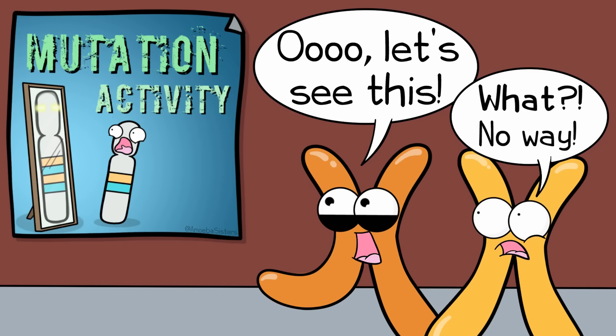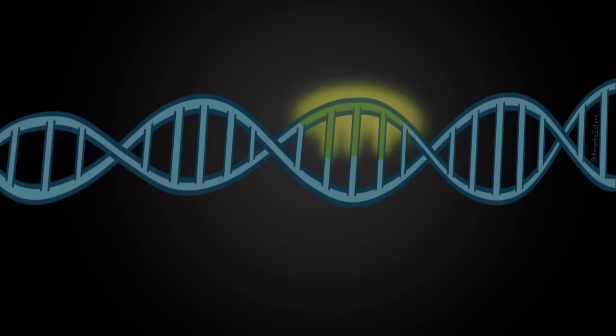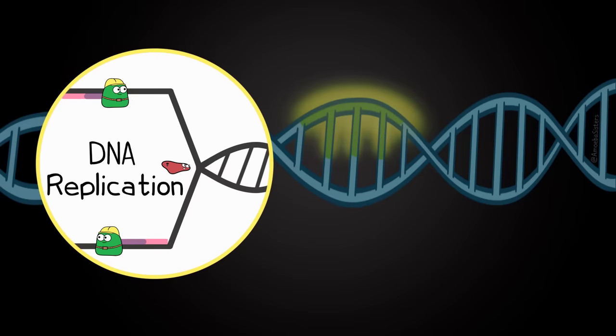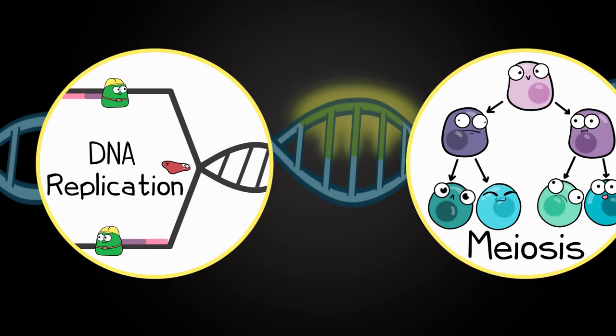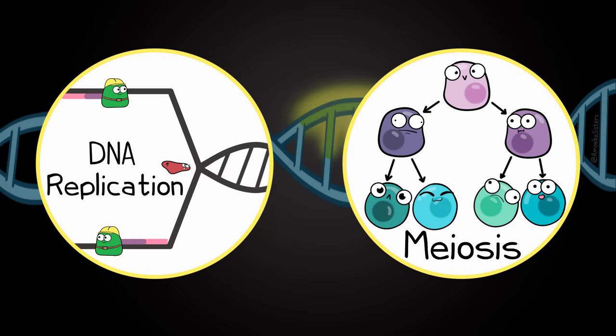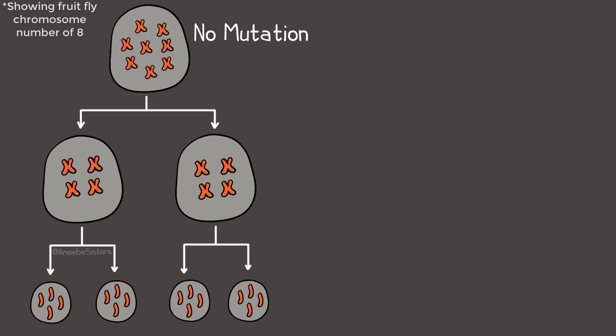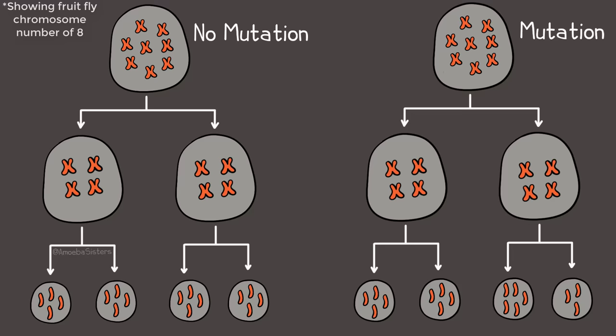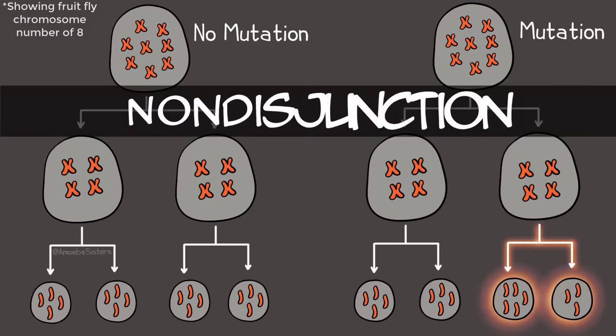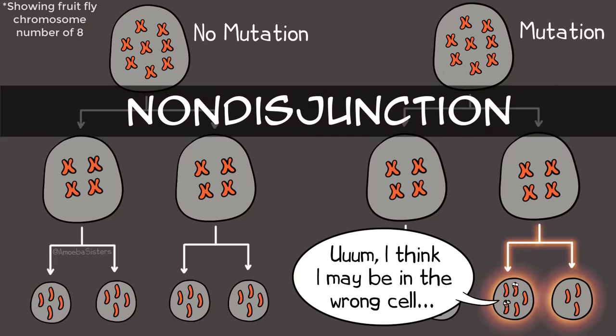There are more mutations than what we covered, of course, but the idea is that there are many different kinds of changes that can happen. If a mutation is going to happen, there are especially vulnerable times such as during DNA replication, but also during meiosis. In fruit flies and other animals, meiosis makes sperm and egg cells that have half the number of chromosomes. However, sometimes those chromosomes don't separate completely — we call this non-disjunction — which can result in an egg or sperm cell that has too many or too few chromosomes.